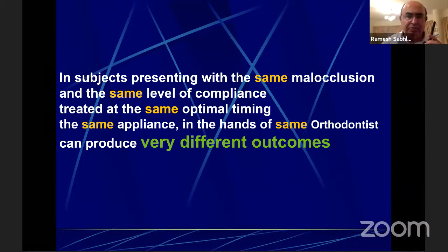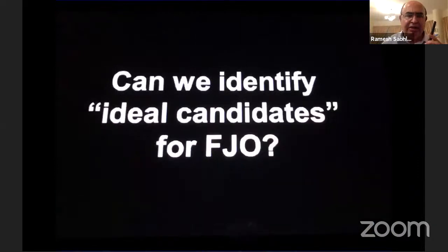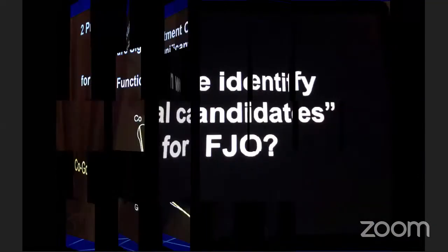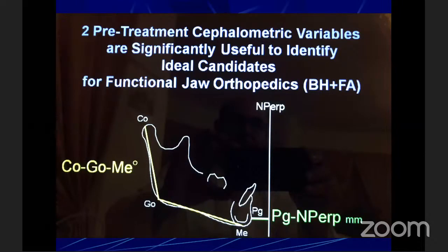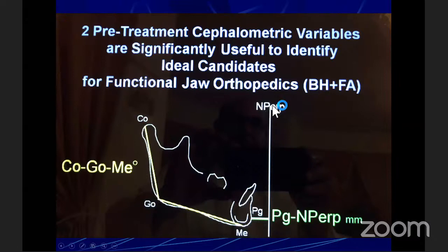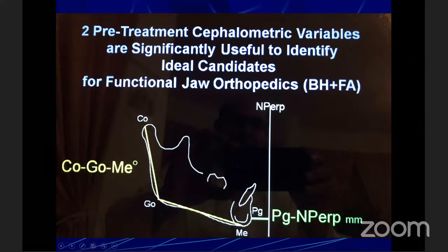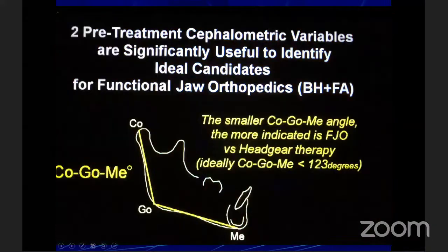Let's talk about individual patient responsiveness — the fifth dimension of dentofacial orthopedics. The amount of supplementary growth of the mandible when compared to untreated Class 2 controls varies widely among studies and within the same study. This is the individual variability in responsiveness to functional jaw orthopedics. In subjects presenting with the same malocclusion, same compliance, treated at the same optimal timing, with the same appliance, by the same orthodontist, very different outcomes can be produced. Can we identify ideal candidates for functional jaw orthopedics? Two cephalometric variables are significantly useful: the mandibular angle from condylion-gonion to menton, and the nasion perpendicular to pogonion distance.